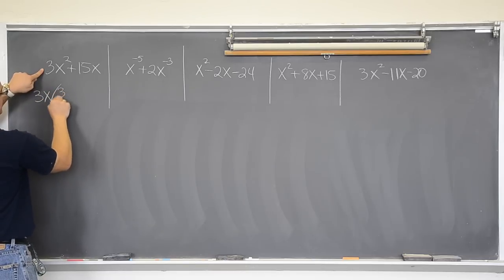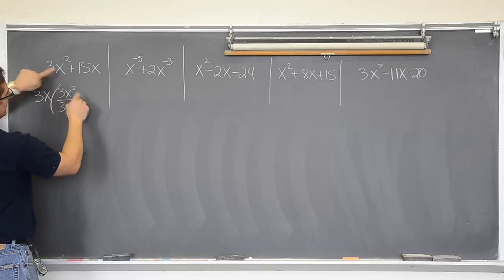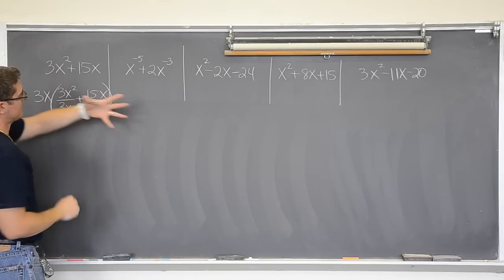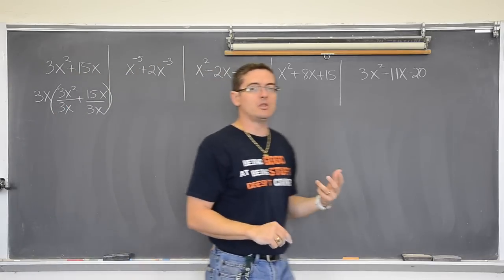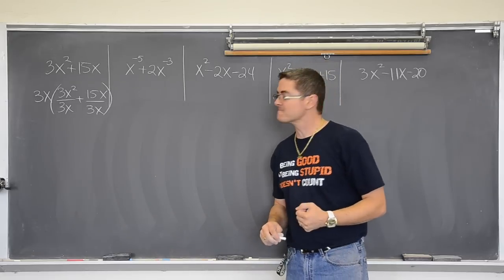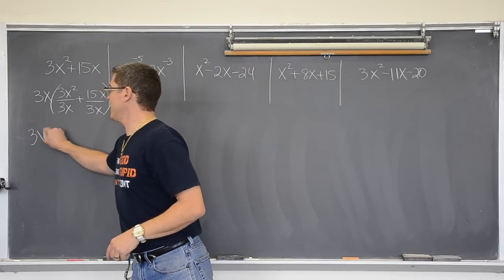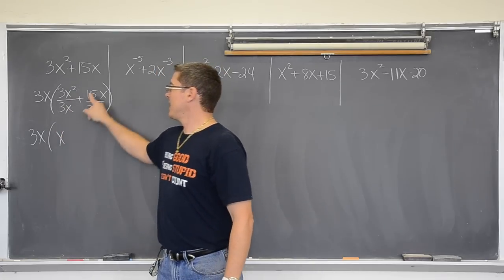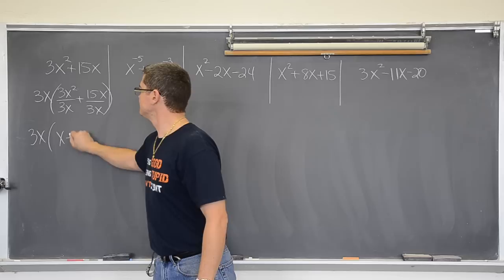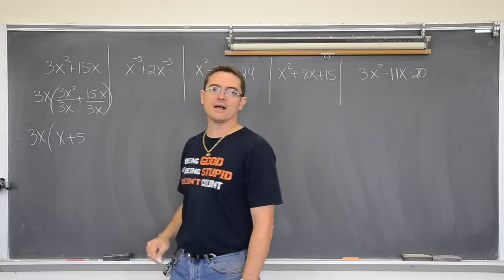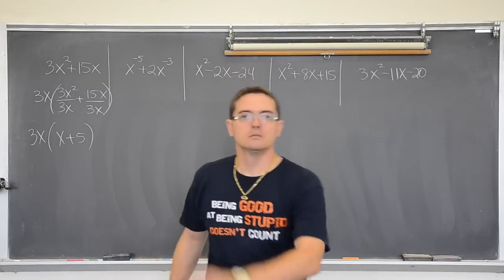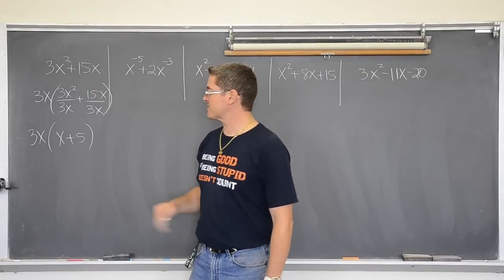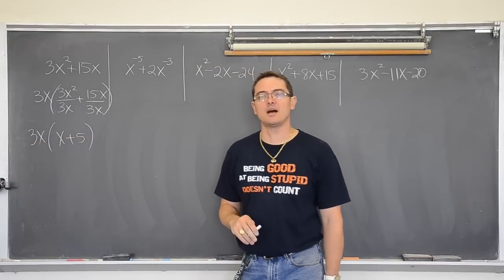So we are going to take 3x out. 3x² divided by 3x is x, and 15x divided by 3x is 5. So 3x² + 15x equals 3x times (x + 5) when it is factored.